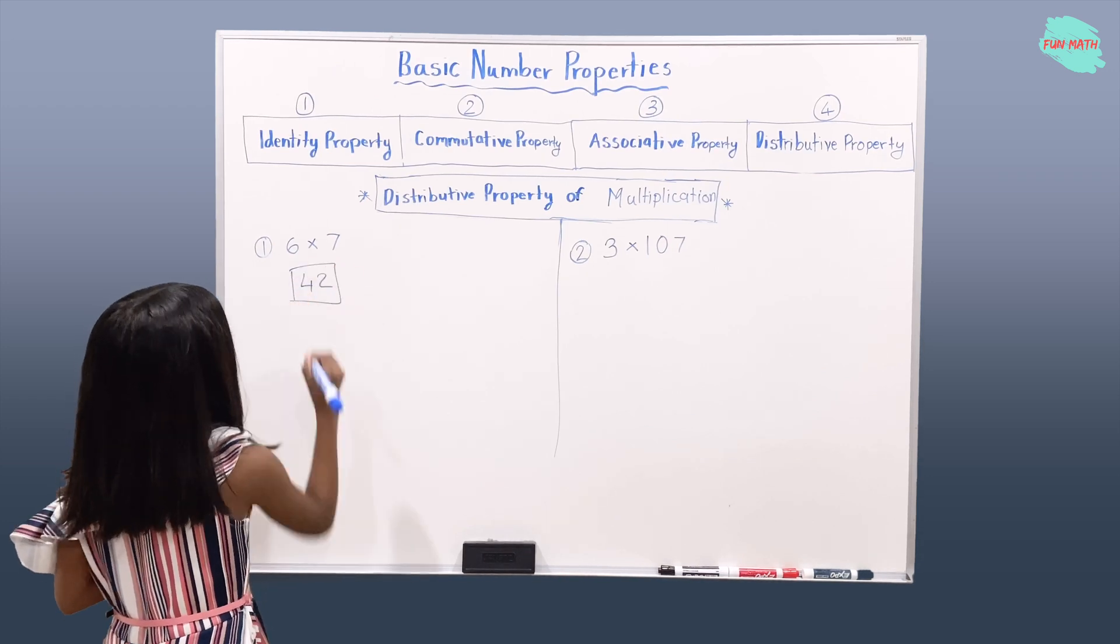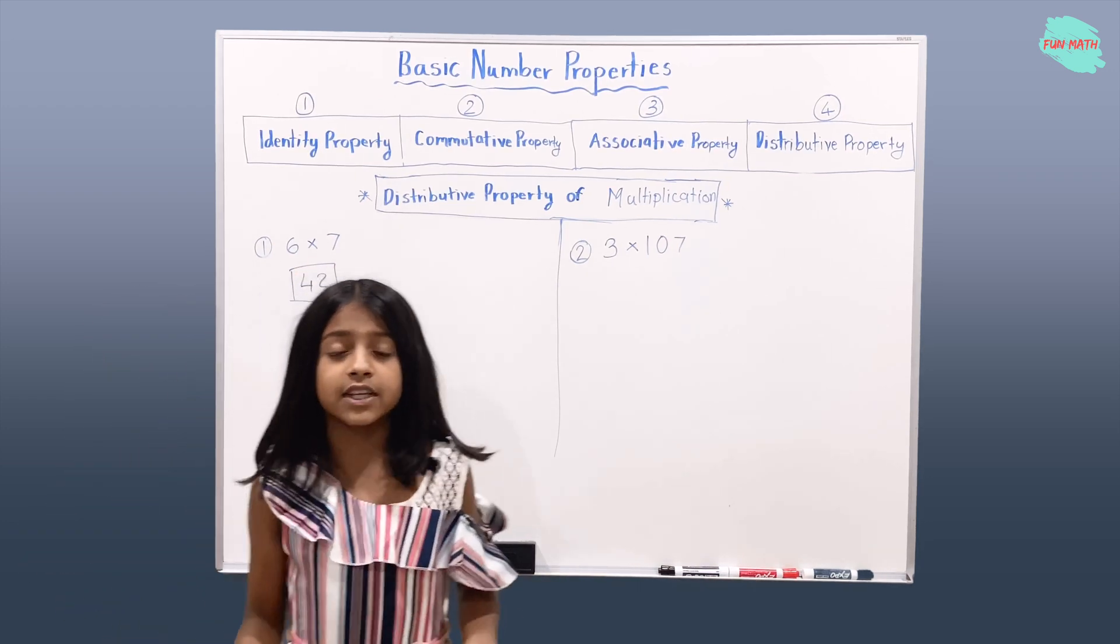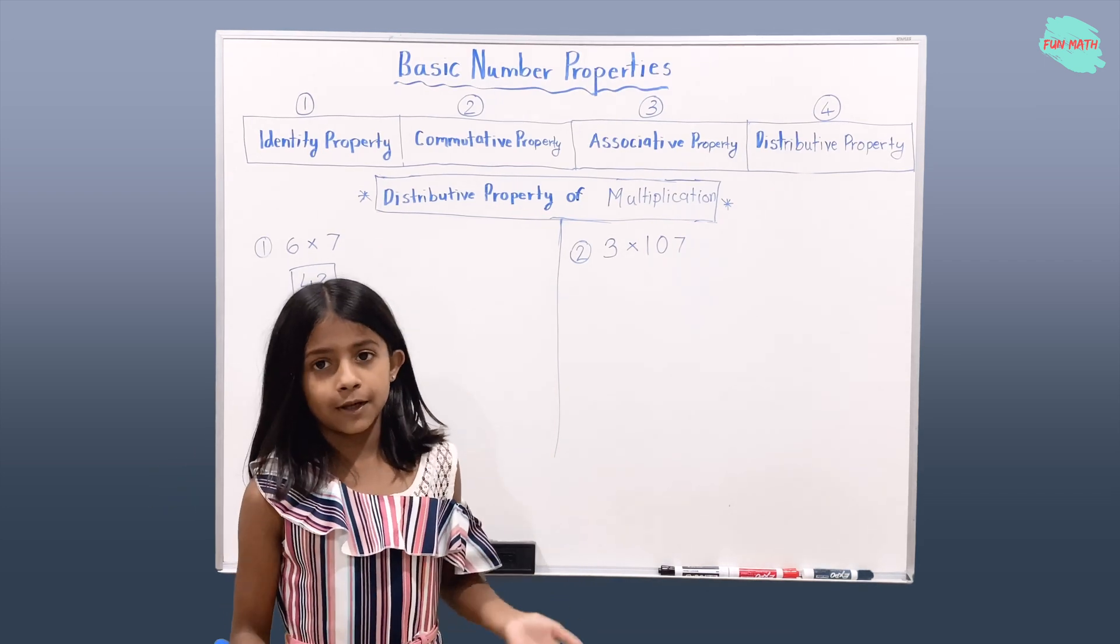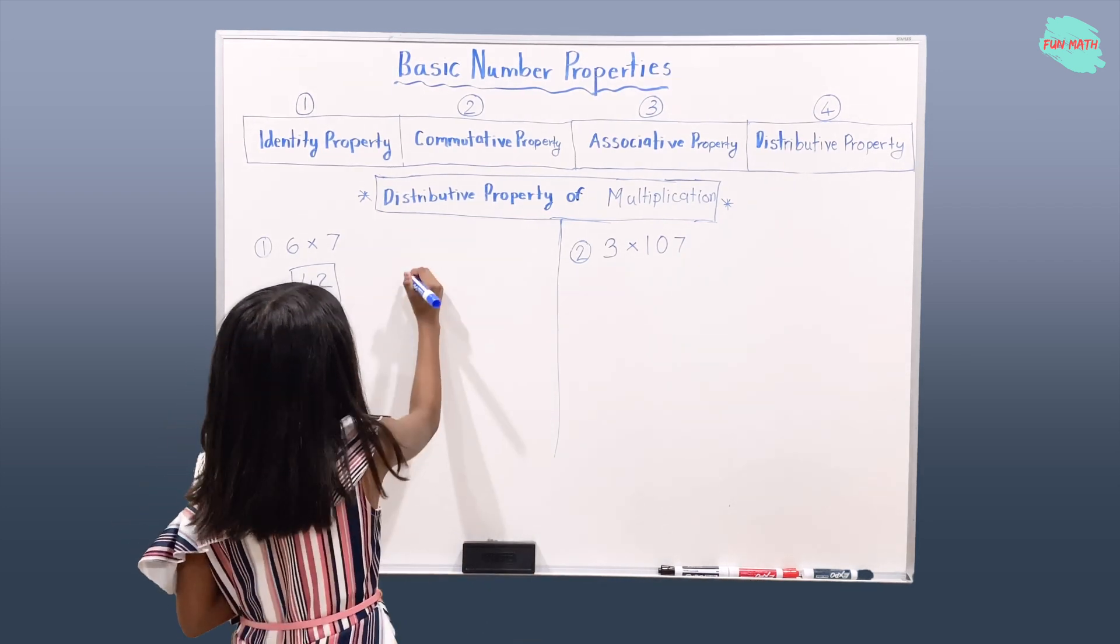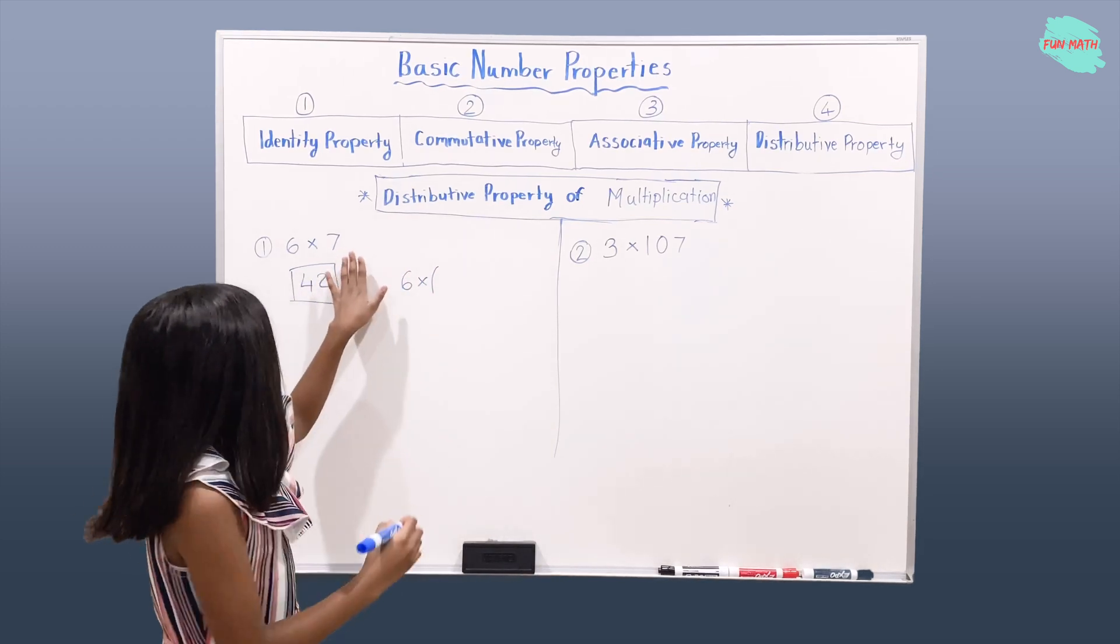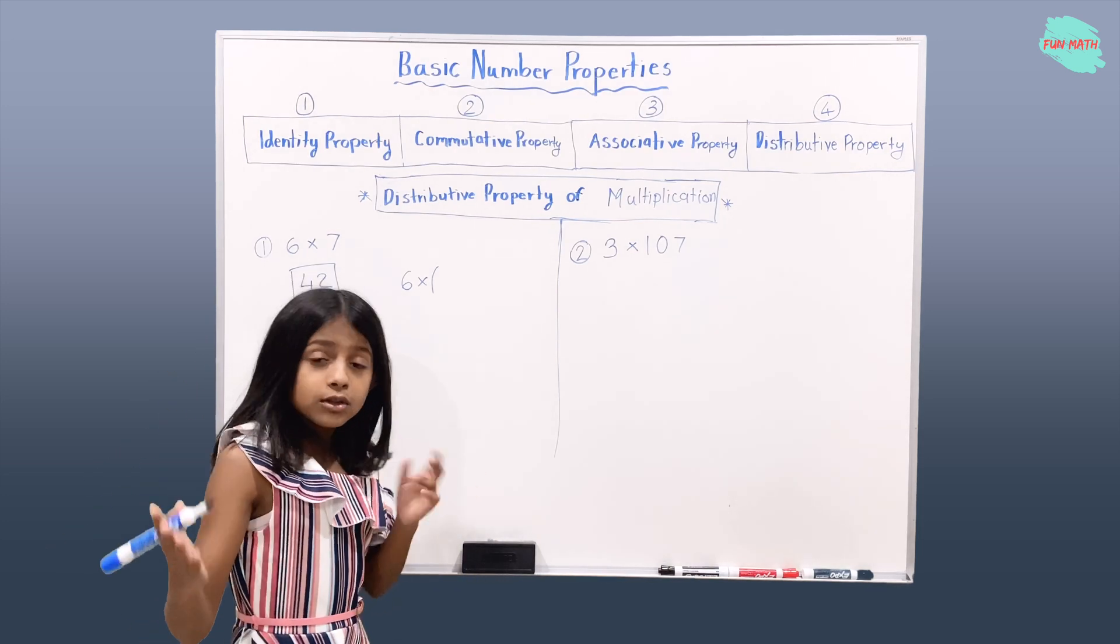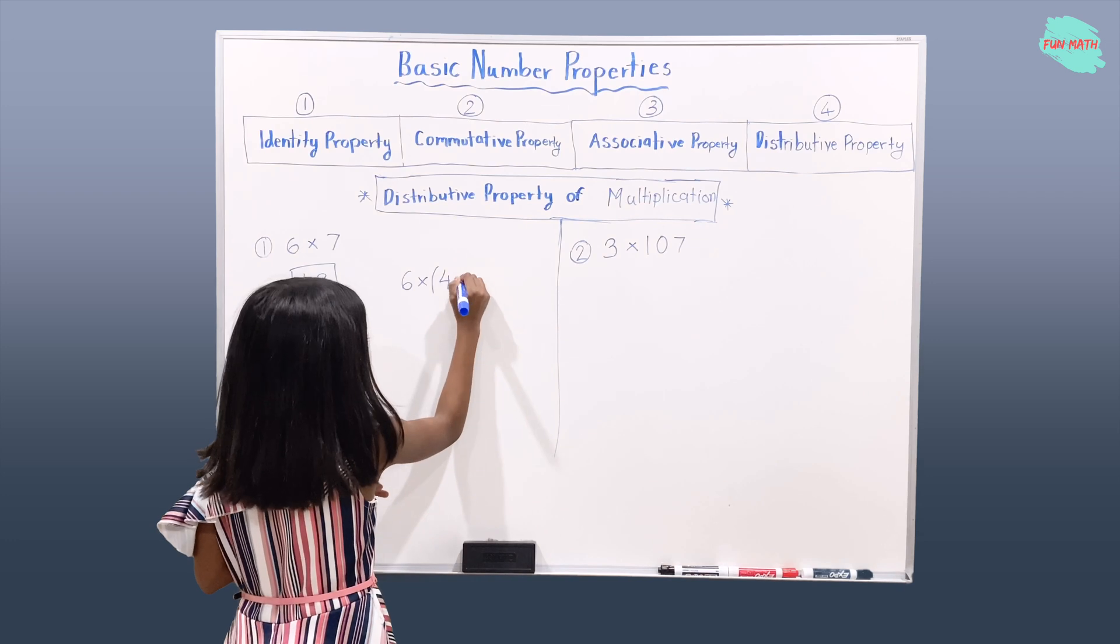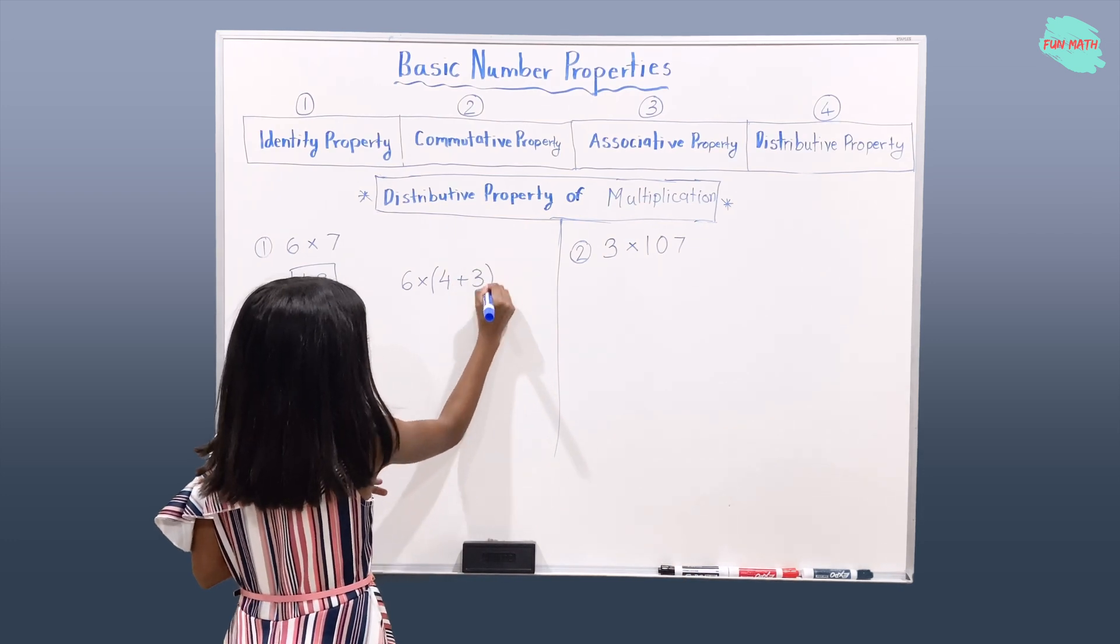So now we're going to write 6 times 7 in the distributive property way. Okay, so 6 times parentheses. I'm going to split 7 in half. But those two numbers I'm going to split is going to be my numbers 4 and 3.